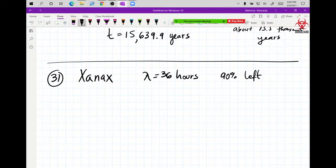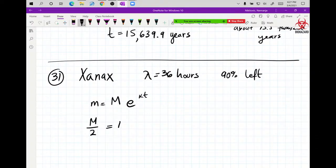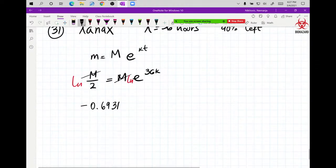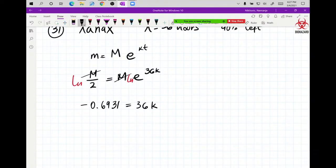Calculation is always the same. You start your mass, initial mass, which is actually initial dose, E to the KT. Plug in your half-life information. Half of the mass remaining when we have 36K, when time is 36. Lambda is time, so you plug it in for T. M and M cancels. And then you hit both sides with LN. And you have your negative 0.6931 equals to 36K.